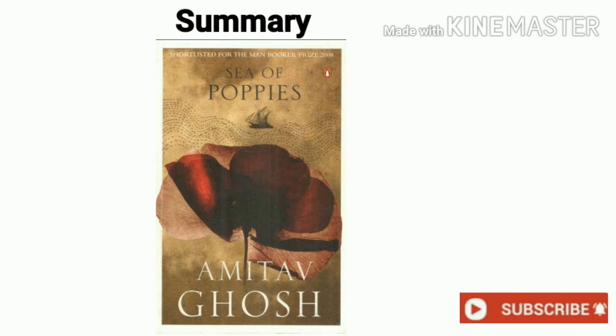The story revolves around a ship called the Ibis, originally built in America as a slave ship for transporting slaves from Africa. After the abolition of slavery, it was sold to a British shipping company and trading house, Burnham Brothers, which had extensive interests in India and China. The new owner, Benjamin Burnham, acquired the vessel with an eye to refitting it for shipping opium to China and transporting indentured laborers to British colonies in the Caribbean. The ship has a British captain, Mr. Chillingworth, who is an opium addict, and a first mate, Mr. Crowle, who is a rogue.